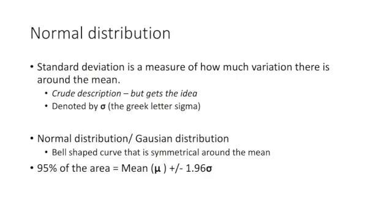When we start getting lots of data we need to see how much variation there is around the mean, and this is called standard deviation. It's a crude description but it gets the idea across, and it's denoted by the Greek letter sigma — you can see the sigma symbol there.